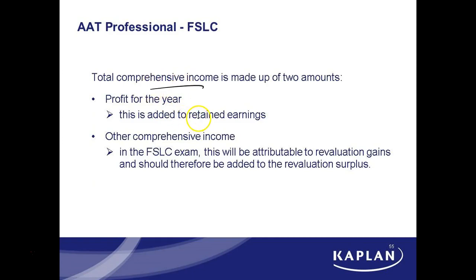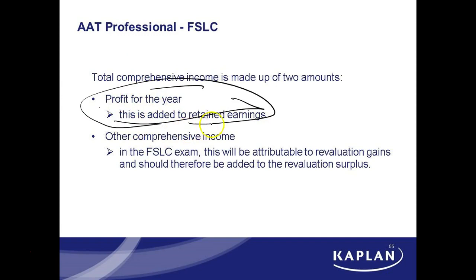So total comprehensive income is — well, of course — that's what the profit for the year is, which we know. And then other comprehensive income — they're telling you clearly that it'll be to do with your valuation gains.